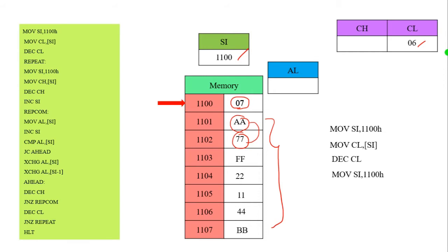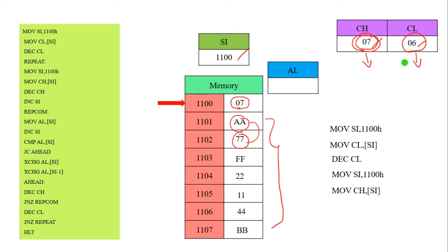The CL register is used to perform the comparison operation — it controls the number of times we are going to compare. This is the repetition count. Repetition means how many times the comparison will be performed. The re-comparison means we are going to compare one by one. This is the bubble sorting method.